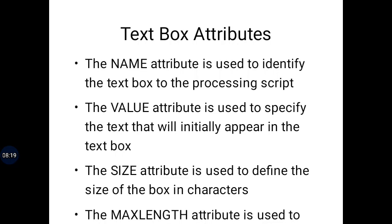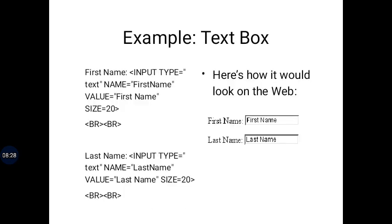The size attribute defines the size of the text box in characters. The maxlength attribute specifies the maximum length of data that can be entered. For example, using input type='text', name='firstname', value='First Name', and size to specify the box width — the output will display the text box on screen with those settings.